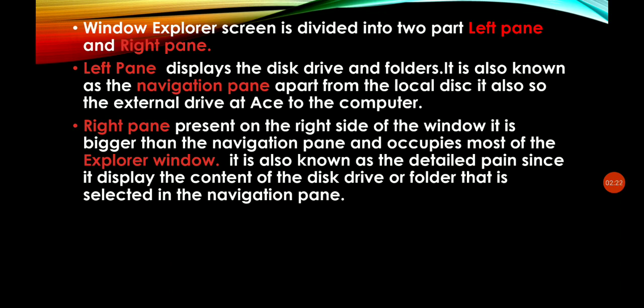The right pane is present on the right side of the window. It is bigger than the navigation pane and occupies most of the Explorer window. It is also known as the detail pane. It displays the content of the disk drive or folder that is selected in the navigation pane. The folders and files are visible in the right pane.